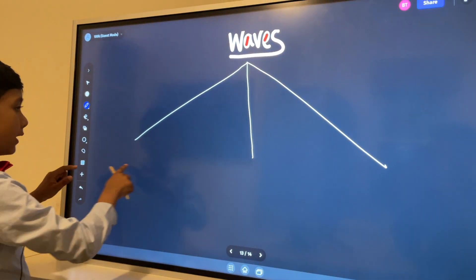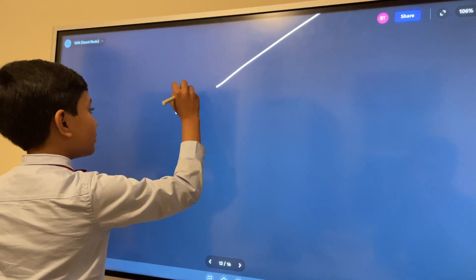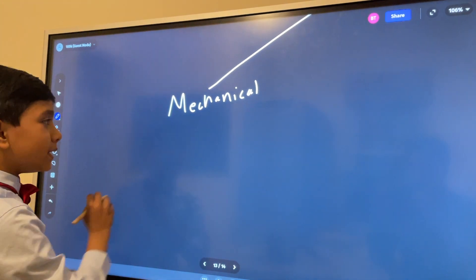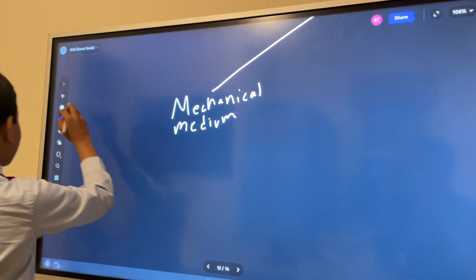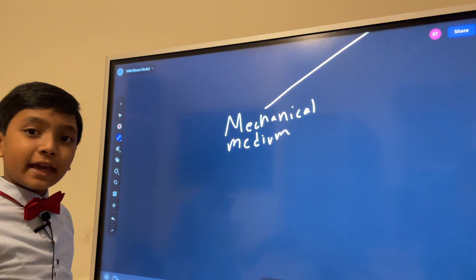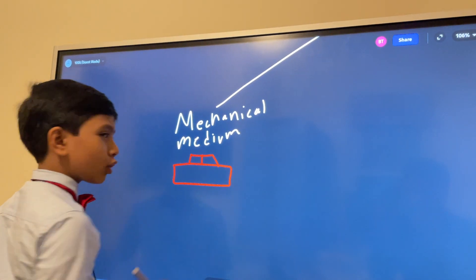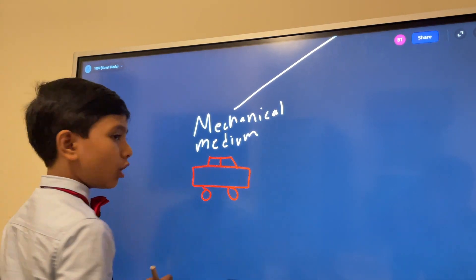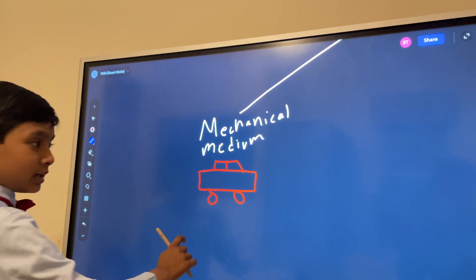Now the first kind of wave we will get into is the mechanical wave. Now mechanical waves are waves that need a medium. Now what is a medium? Well, a medium is really just a substance that can carry our wave. Think of it as the car of a wave. Think of it as a wave car. Some examples include air, water, glass, and other substances.